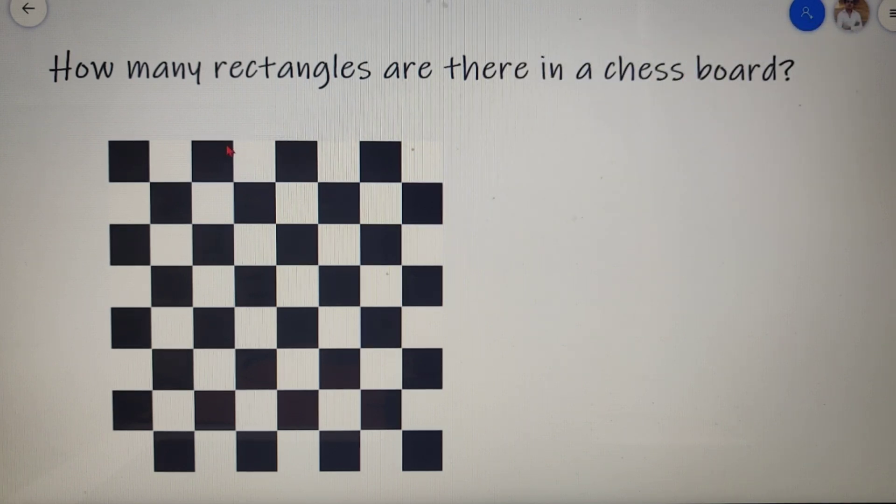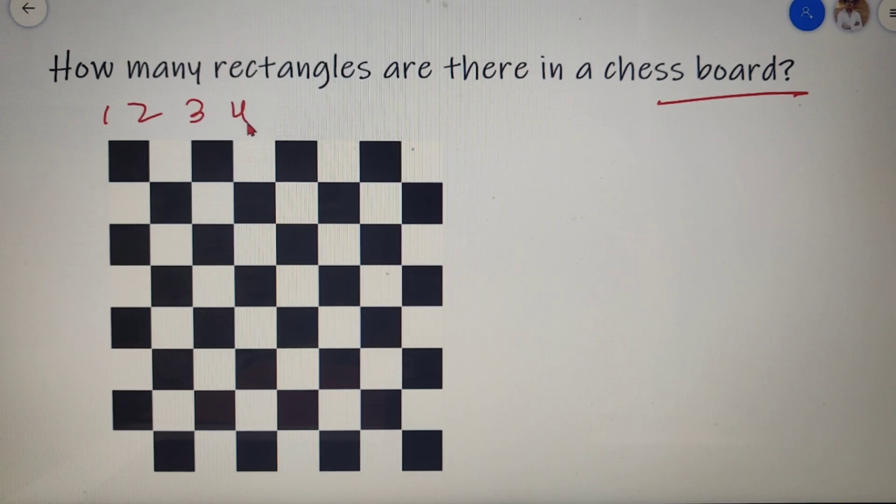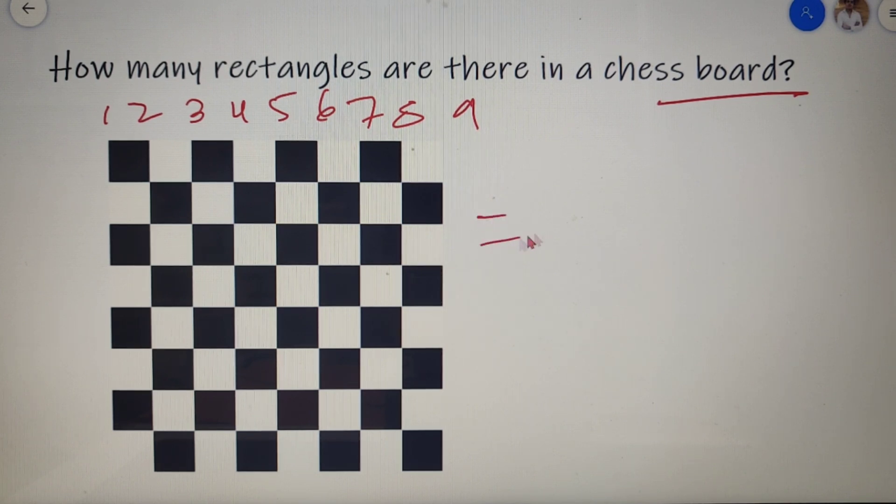Now going back to our question, we have to find how many rectangles are there in a chess board. So over here I have taken a simple image of a chess board. So let's find that how many vertical lines are there. So if I start calculating I will find that there are 1, 2, 3, 4, 5, 6, 7, 8 and 9. And since the chess board has same number of horizontal lines, so I can say that we have 9 horizontal and 9 vertical lines in a chess board.